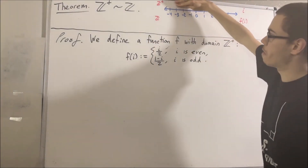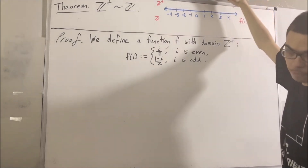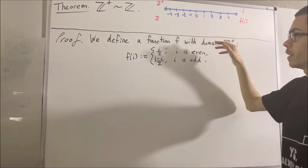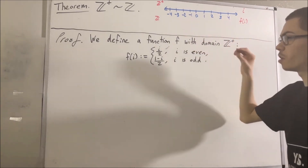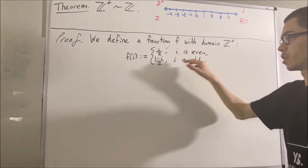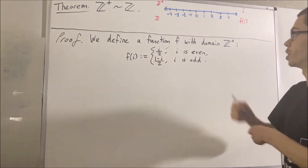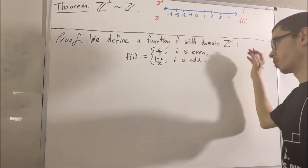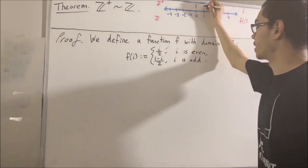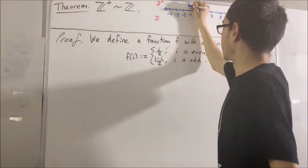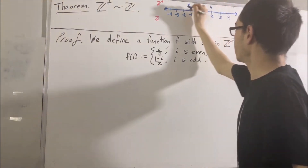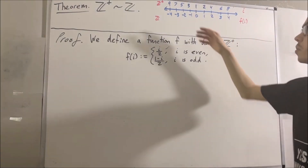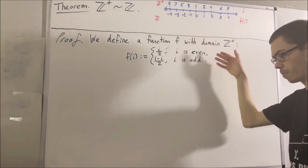Let's think of everything above our number line as the inputs, and everything below the number line as the outputs. If we consider the positive integer one and send it into the function f, one is odd, so f of one is one minus one over two, which is zero. So one gets assigned to zero. Similarly, if you send two into the function, two gets assigned to one. Three to negative one, and here is how the pattern will go. So this gives you a visual idea of where this function comes from.